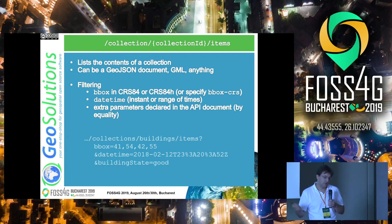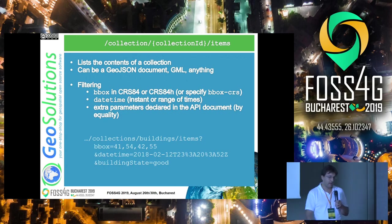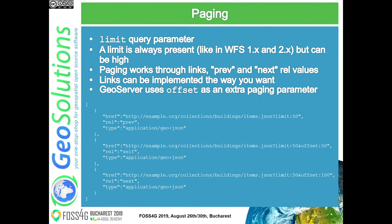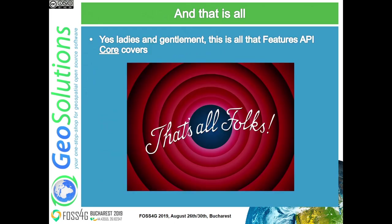Access to items just gives you the contents of the collection. You can filter, but only on bounding box and datetime — those are the two basic filters. Any extra query parameter declared in the API document can also be used as a filter. Paging is supported via a limit query parameter, and it's implemented by links — prev, self, next — telling you the previous and next page, allowing you to implement paging whatever way you want. GeoServer uses an offset parameter, which allows random paging. If you were implementing on Elasticsearch, you would have something else that doesn't allow random paging. And that's all — this is the WFS3 core. This is all it can do.